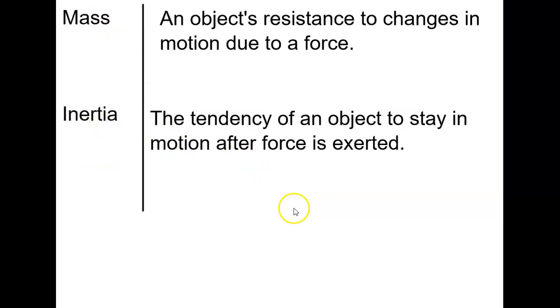Mass directly contributes to the inertia of an object. So inertia is the tendency of an object to stay in motion after a force is exerted and that is directly correlated to mass.